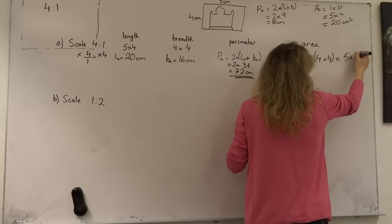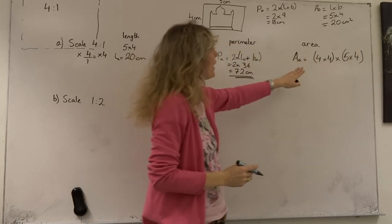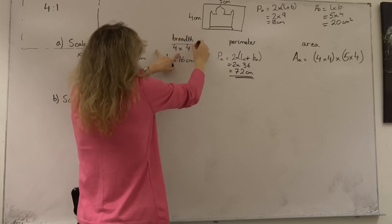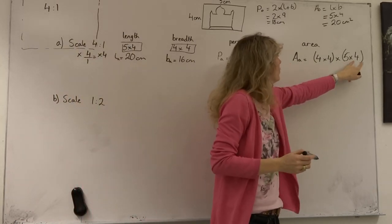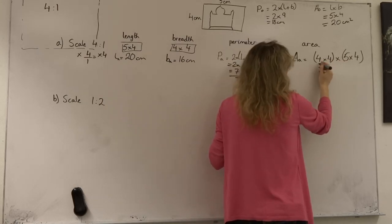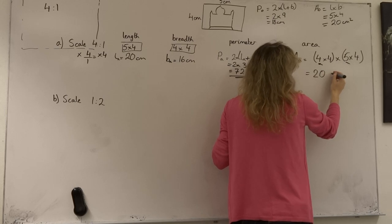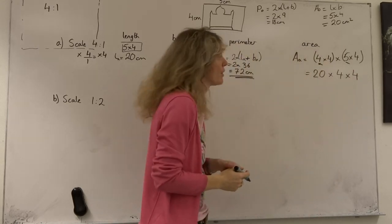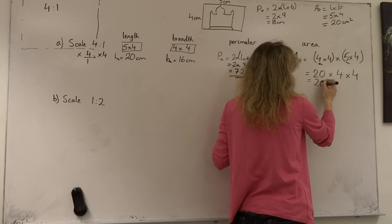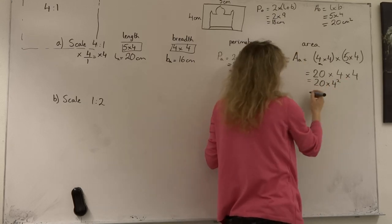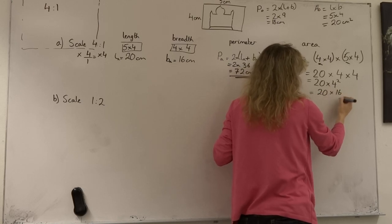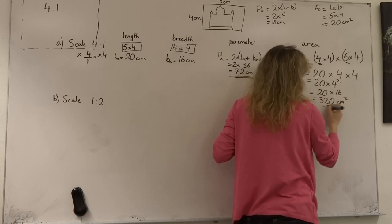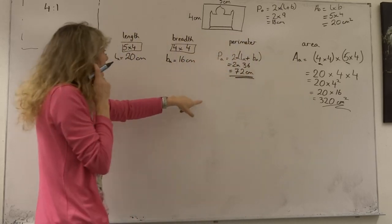Putting it in terms of the individual increases — length increase 4 times 4, breadth increase 5 times 4 — we know 4 times 5 is 20. What's left over is a 4 times magnification of the length and a 4 times magnification of the breadth. So the area ends up being 20 times 4 squared. Since 4 squared is 16, we get an area of 20 times 16, which is 320 centimetres squared.